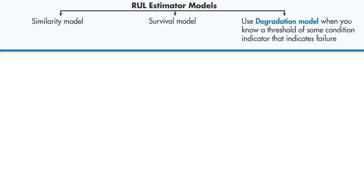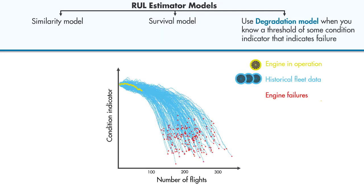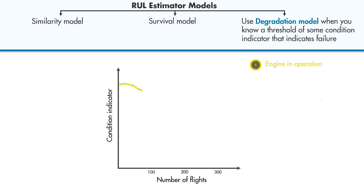In some cases, no failure data is available from similar machines, but we may have knowledge about a safety threshold that shouldn't be crossed as this may cause failure. We can use this information as follows. We can fit a degradation model to the condition indicator, which uses the past information from our engine to predict how the condition indicator will change in the future.